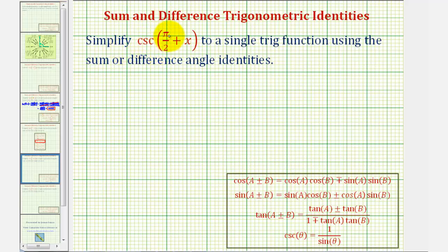We want to simplify cosecant of the quantity pi divided by two plus x to a single trig function using the sum or difference angle identities given here below.